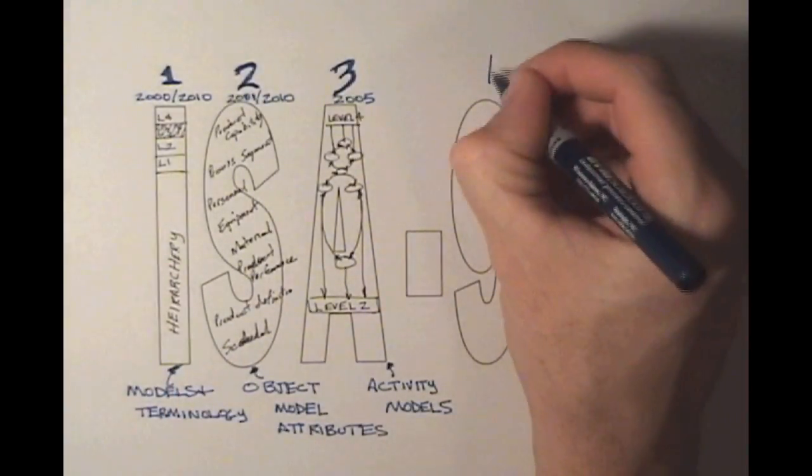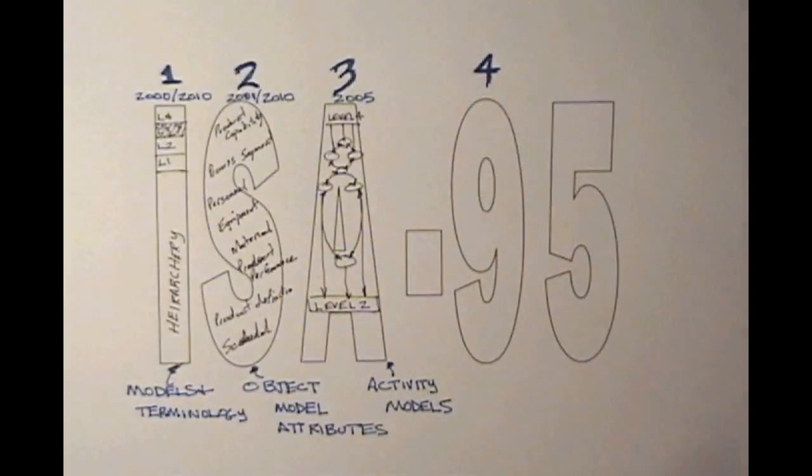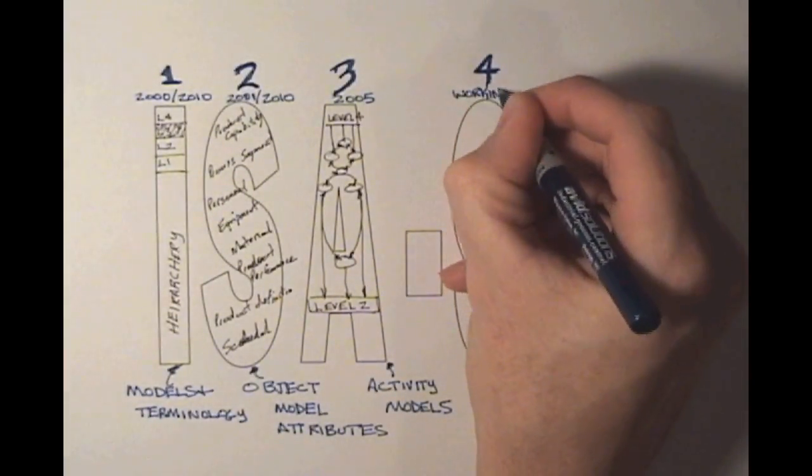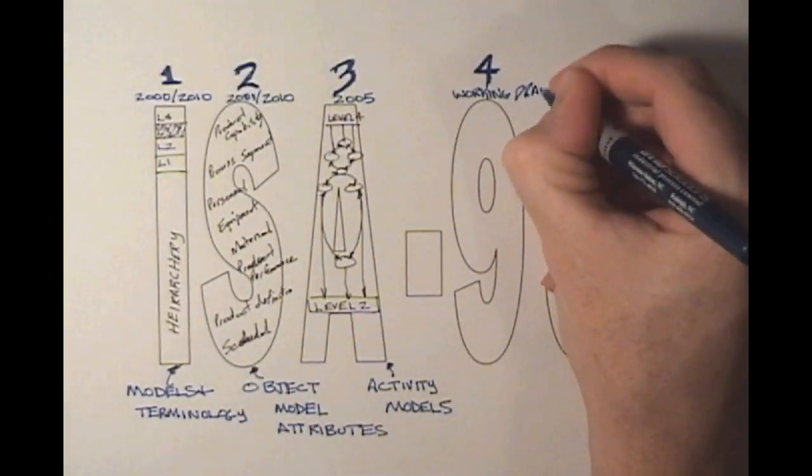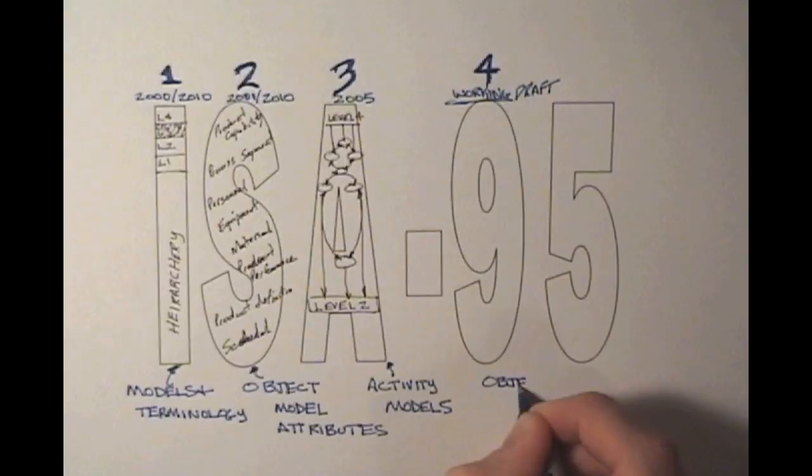Part 4 is a working draft, and it further defines object models and attributes. It's an extension of Parts 2 and 3. Notice I highlight the term working draft because it revisits the generic activity models that were defined in Part 3 and really focuses on the Manufacturing Operations Management Space, or MOM.